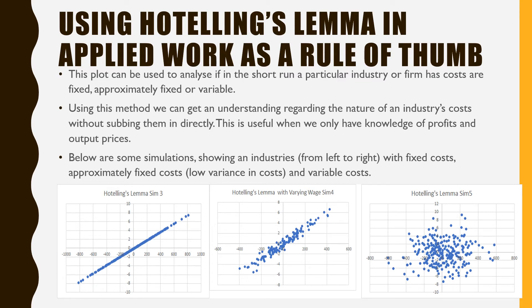This is useful when we only have knowledge of a firm's profits and output prices. Below are some simulations showing industries — left to right — with fixed costs, approximately fixed costs (meaning there's low variance in costs), and completely variable costs.